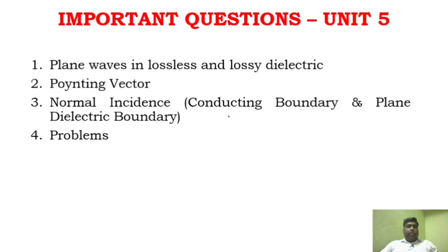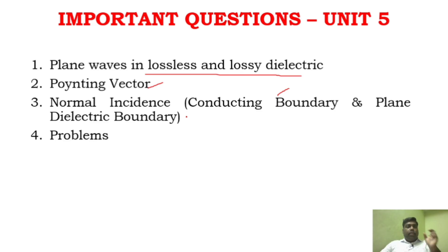For Unit 5, you will have once again 3 areas — plane waves in lossless and lossy dielectric. Poynting vector is a very very important topic in Unit 5. Similarly, normal incidence — look at it in 2 conditions: conducting boundary and plane dielectric boundary. Go through the example problems related to these. Please expect problems in EMF — don't have the mindset that you can pass without doing problems. Many problems come in the question paper, and you will be in trouble otherwise.